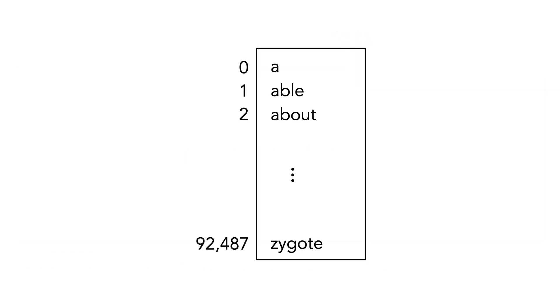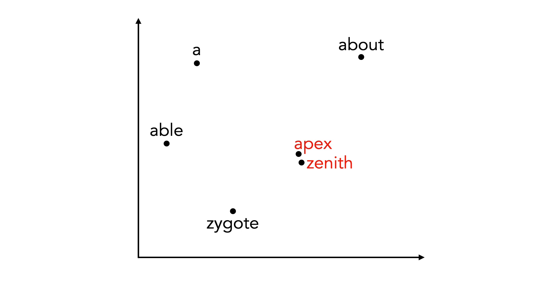You could just number every word alphabetically, but then synonyms like apex and zenith would have very different numbers. It's better to map semantically similar words like this to numbers, or vectors in this case, that are similar. Methods that do this are called word embeddings, and they're readily available online.